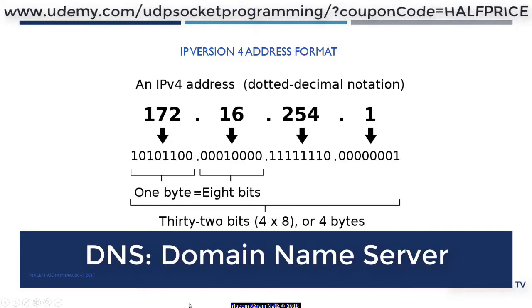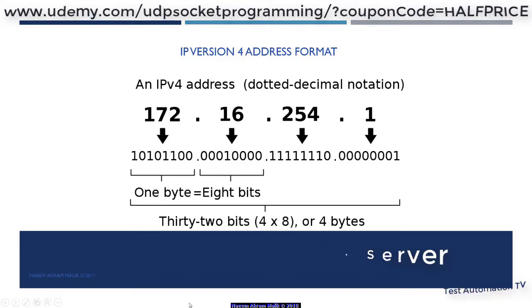The hostname then gets translated into an IP address by a domain name server. This combination of a hostname and a DNS server is commonly used in enterprise scenarios.